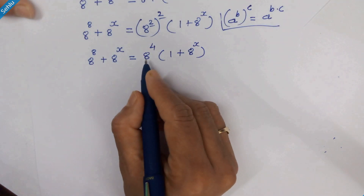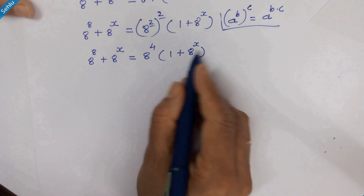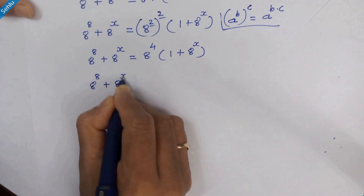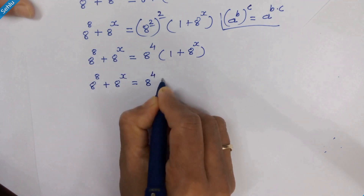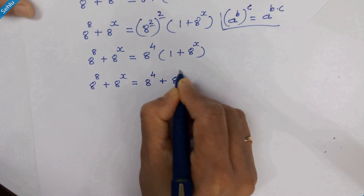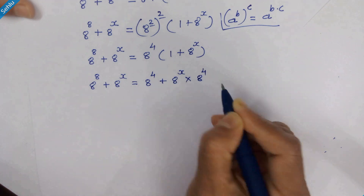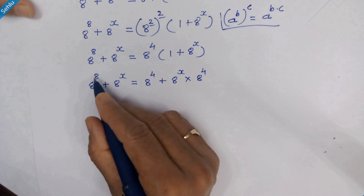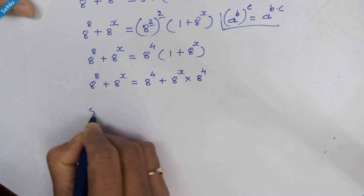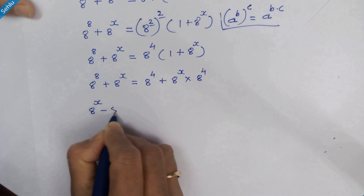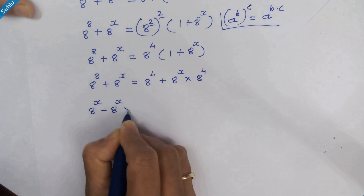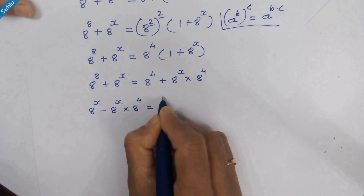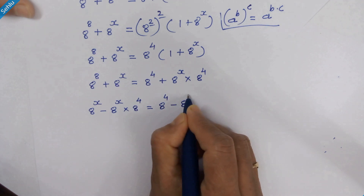In the next step we plug 8 raised to 4 into the bracket, giving us 8 raised to 4 plus 8 raised to x times 8 raised to 4. Now we move terms: 8 raised to x minus 8 raised to x times 8 raised to 4 is equal to 8 raised to 4 minus 8 raised to 8.